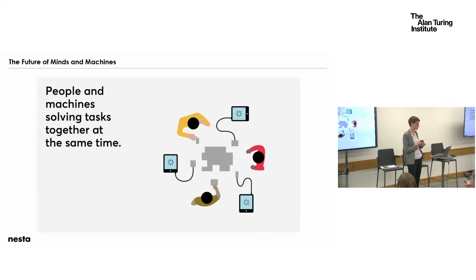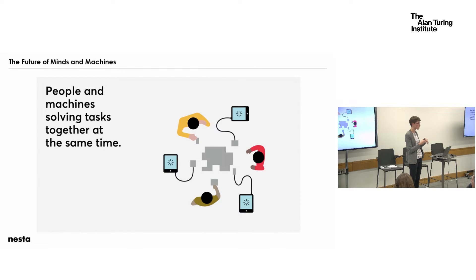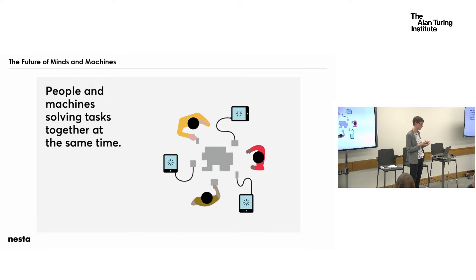A third example is where people and machines actually work at the same time to solve a problem. One of our grantees, Unanimous AI, has developed a platform called Swarm AI, where humans and machines work together simultaneously. A crowd of people on an online platform works together with an artificial agent in the background as part of a closed-loop system to come to a consensus or make predictions. This is being used, for example, in medical diagnostics and to identify political preferences of people.